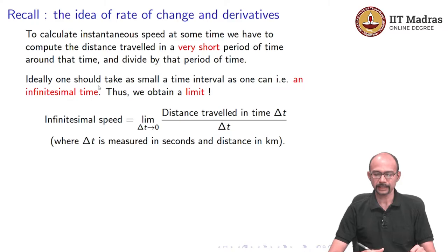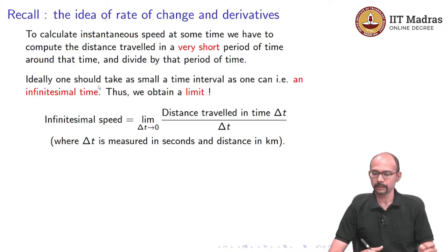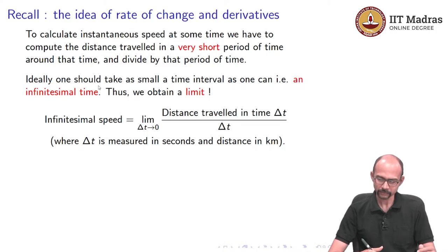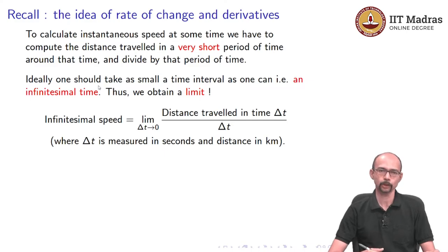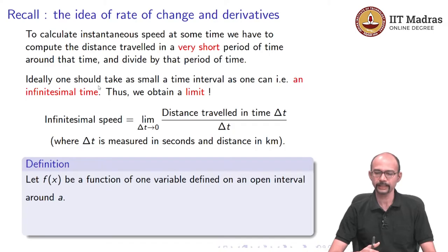Based on these ideas, we reached the conclusion that instantaneous speed is the limit as delta t tends to 0, where delta t is the length of the time interval, of the distance travelled in that time delta t divided by delta t. Of course, we have to talk about units: if we want kilometers per second, we measure delta t in seconds and the distance in kilometers. This led us to the general notion of a derivative, which captures the rate of change.